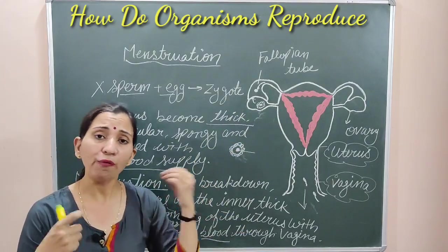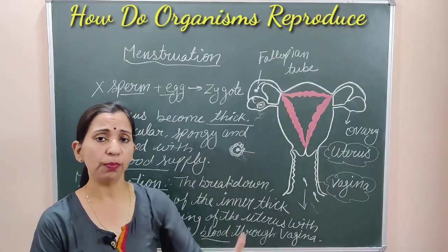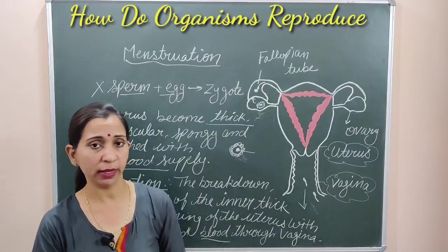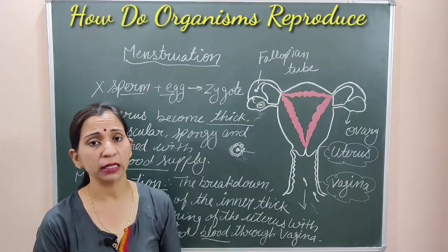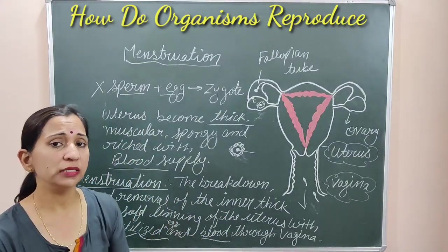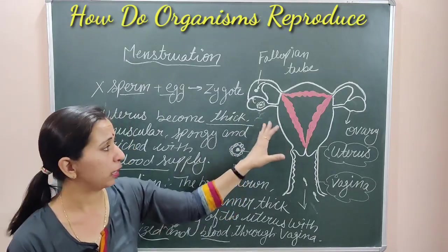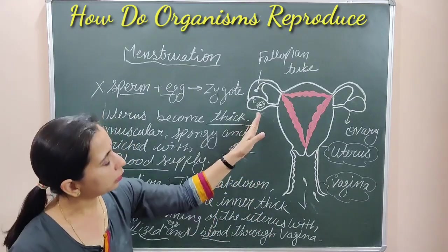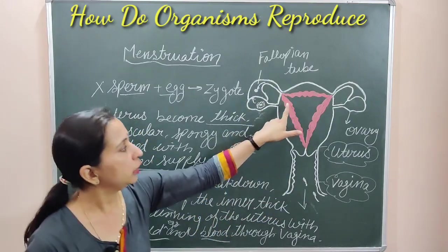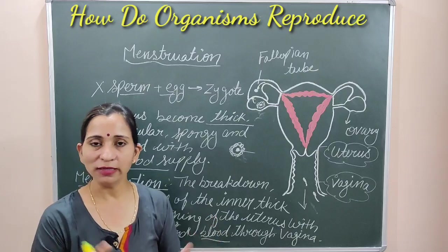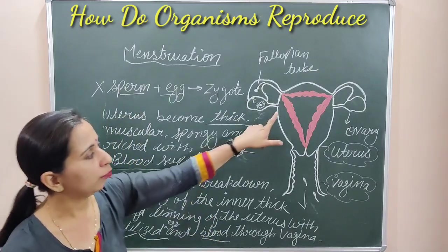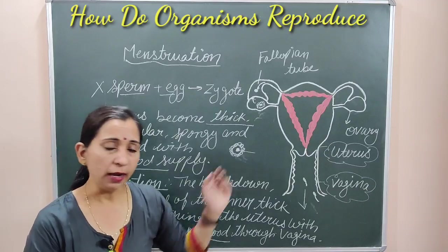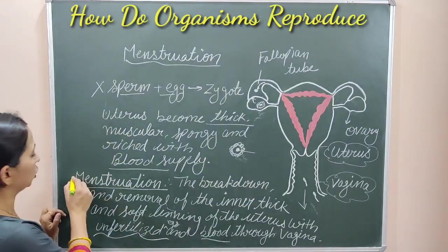The ovary prepares an egg every month in alternate form — both ovaries always prepare eggs. But if the egg is not fertilized, it also dies, because the egg has a time period within which it survives. After that it dies, and the body cannot keep this unfertilized dead egg inside. So the unfertilized egg leaves the body along with the inner lining the uterus had prepared, along with blood — and this is known as bleeding, and this process is known as menstruation.